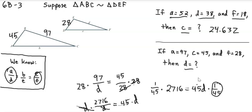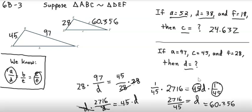Now we're going to multiply by one over 45 on both sides to cancel the 45. We know that one over 45 times 45 equals one, and so that cancels and leaves D. 2716 times one over 45 is 2716 over 45, and so now 2716 divided by 45 is 60.356. So D is equal to 60.356.